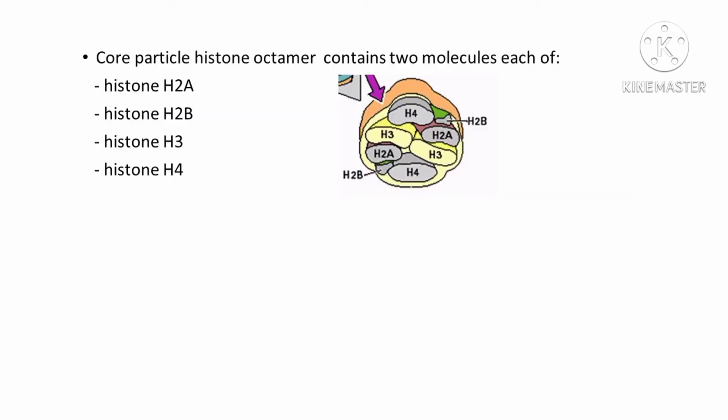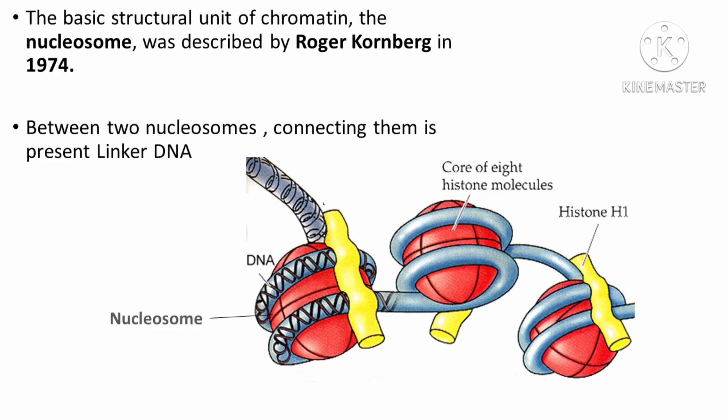The histone core is believed to consist of an octamer of 8 histone molecules. They are arranged in the form of 2 flat tetramers of H2A, H2B, H3, and H4 placed one above the other. The negatively charged DNA is wrapped around the positively charged histone octamer to form a structure called nucleosome.